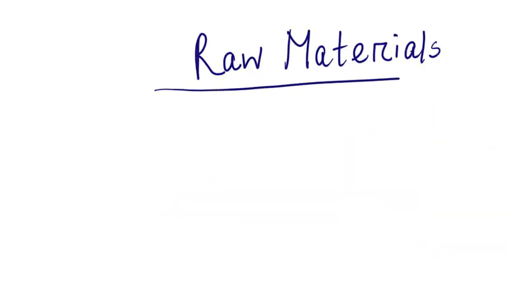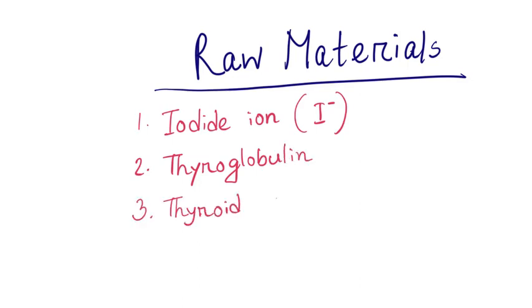We need 3 raw materials for the synthesis of thyroid hormones. These are iodide ion, thyroglobulin, and thyroid peroxidase enzyme. We will describe the process of synthesis of thyroid hormone in some steps.